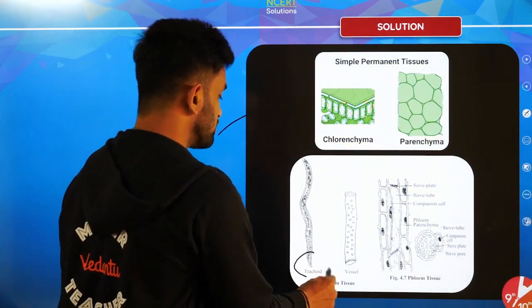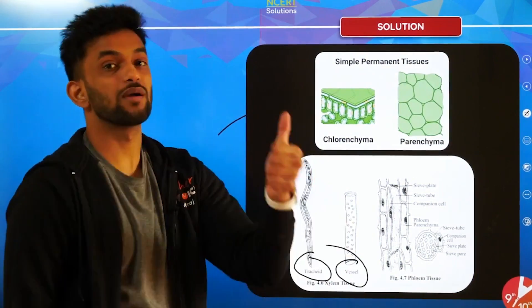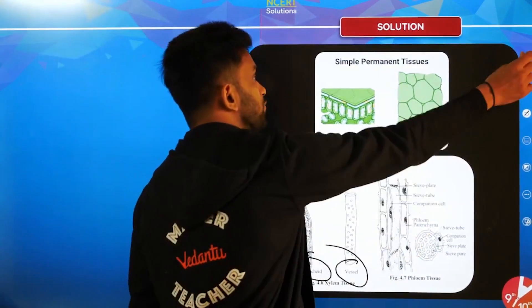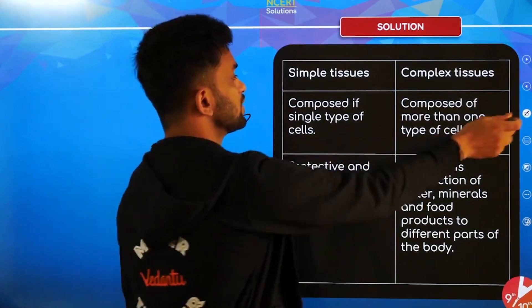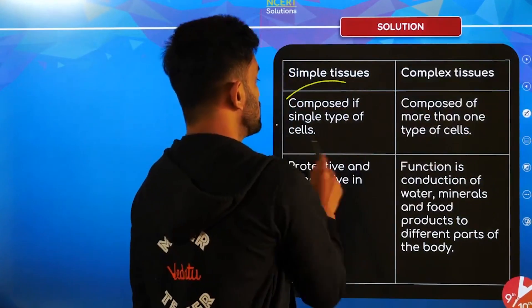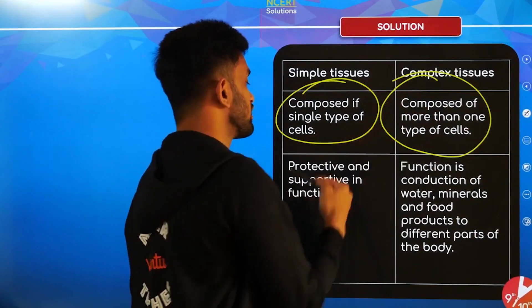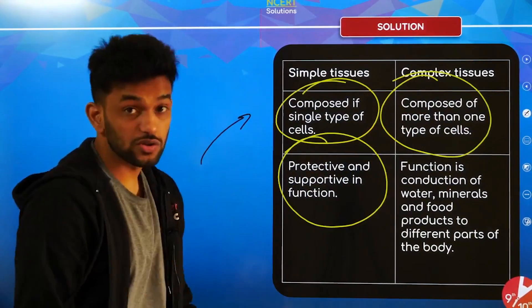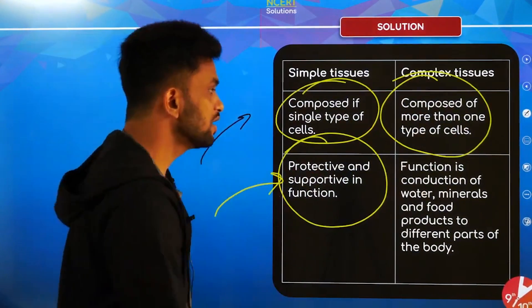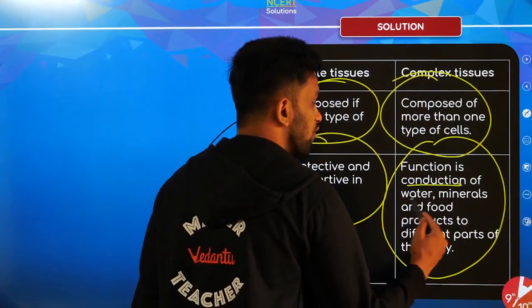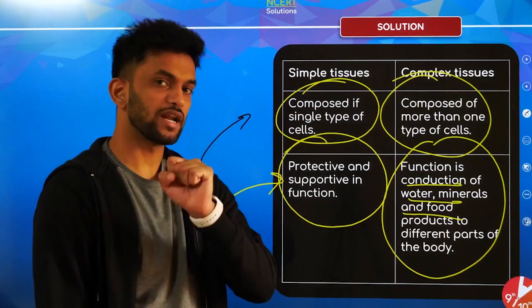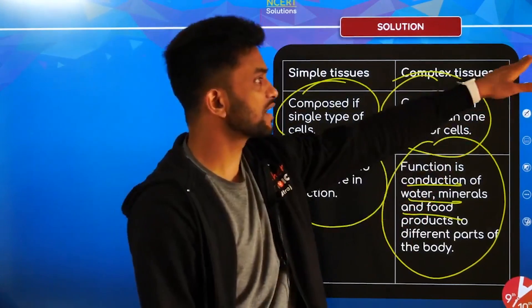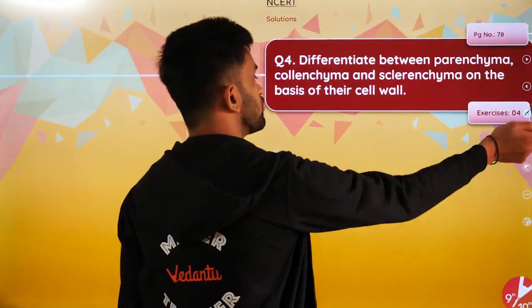Xylem and phloem are made up of four components. Tell me the four components of phloem in the comment box. Chlorenchyma is a type of parenchyma. Xylem is made of tracheid, vessel, xylem fiber, and xylem parenchyma. Simple tissues are composed of a single type of cell; complex tissues are composed of more than one type. Function: simple tissues are mainly protective and supportive; complex tissues conduct water, minerals, and food.